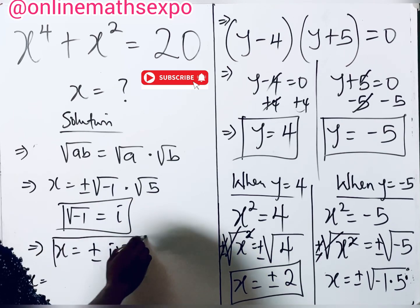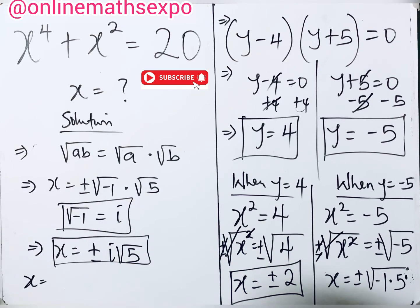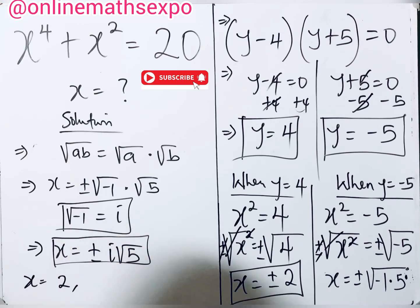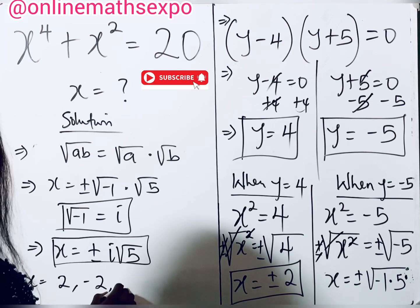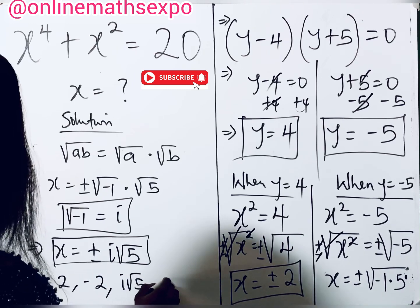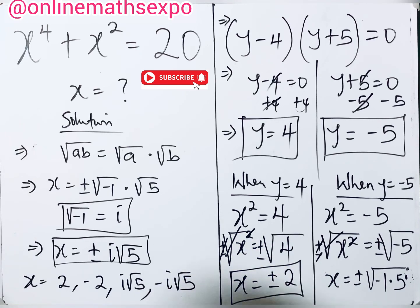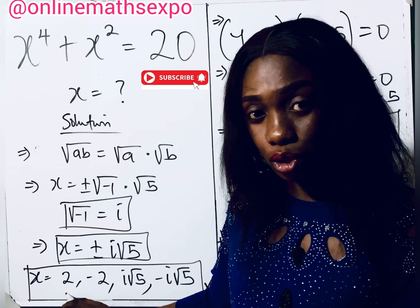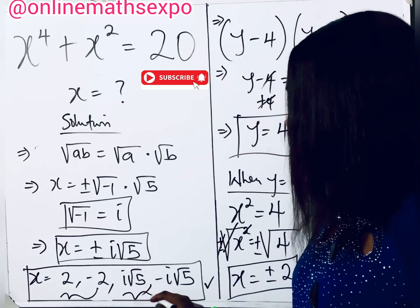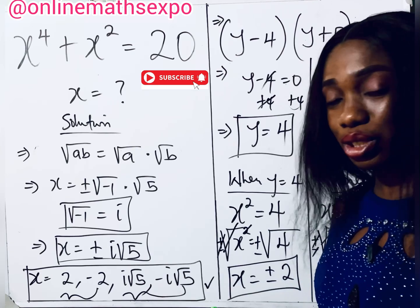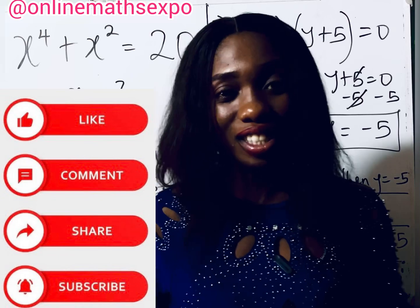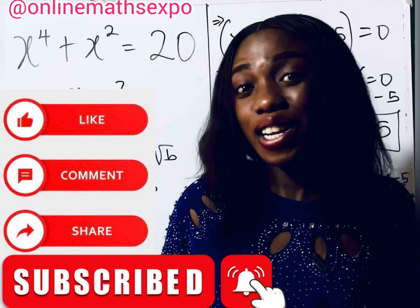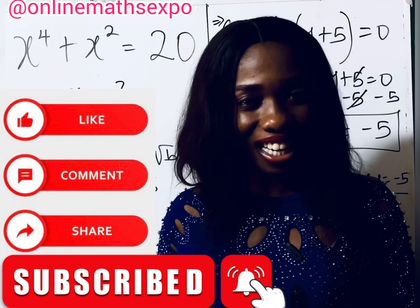In conclusion, the four values of x are: x = 2, x = −2, x = i√5, and x = −i√5. The first two are the real solutions; the last two are imaginary numbers that cannot be found on a number line. I hope you learned a lot — leave a comment, give this a thumbs up, subscribe for more tips, and share so others can learn. See you in the next class!